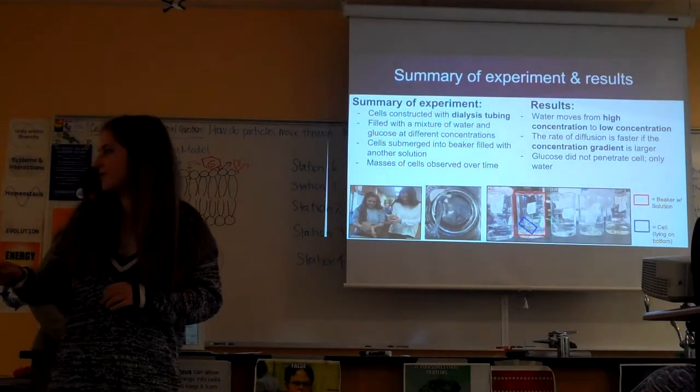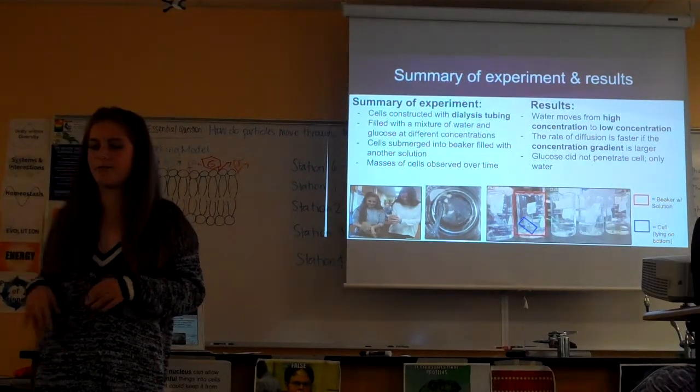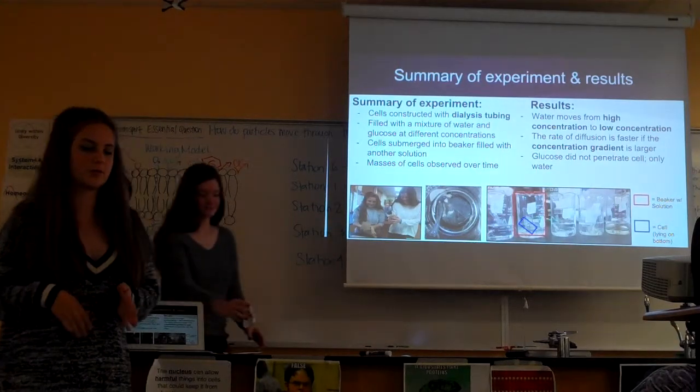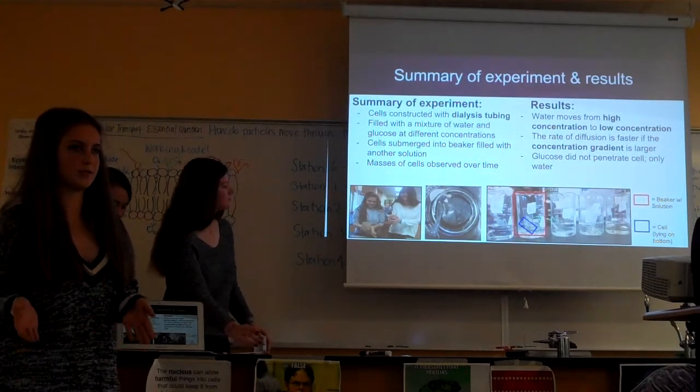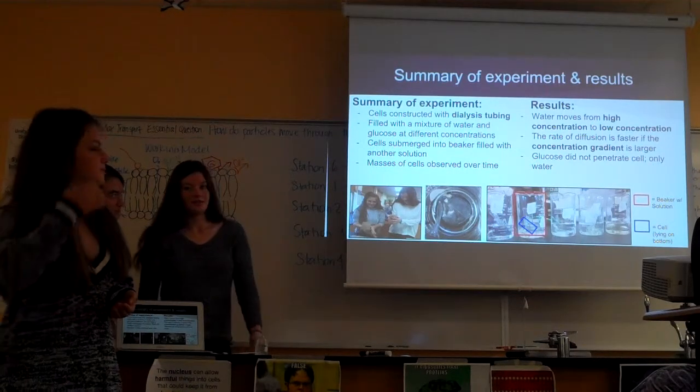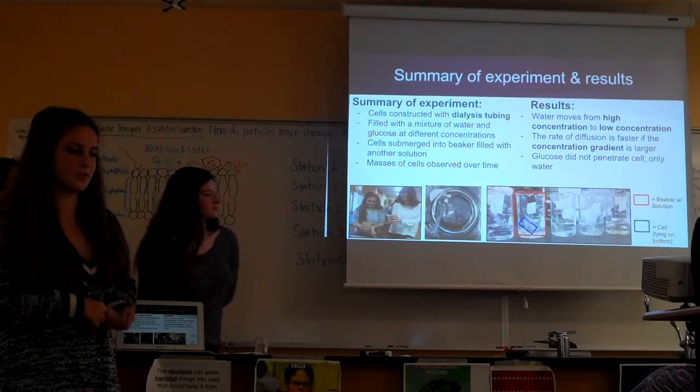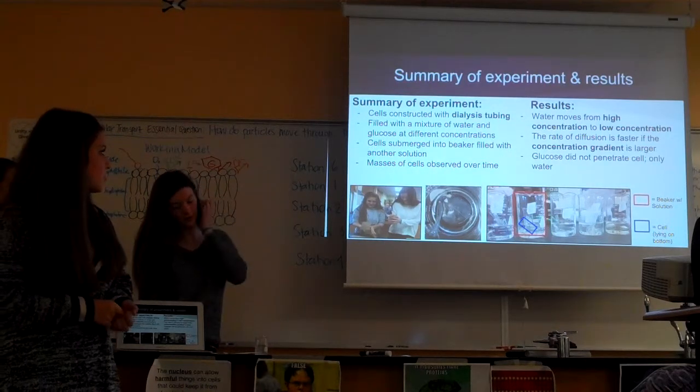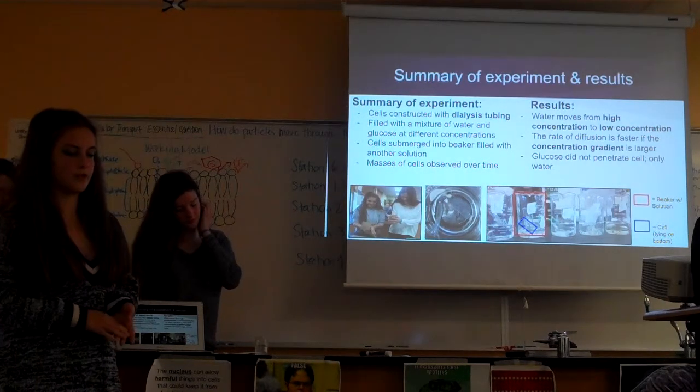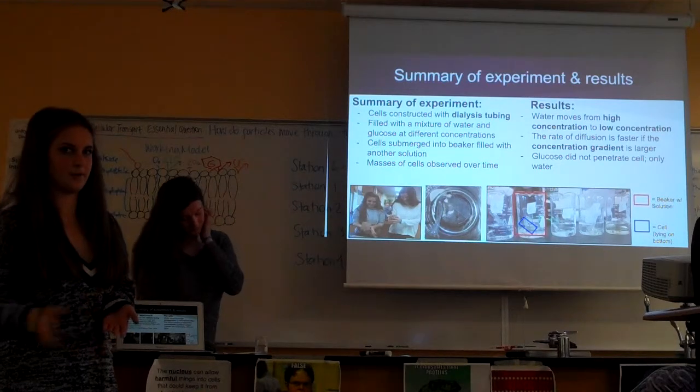We filled each with varying amounts of water and glucose. We filled cell A and cell E with solely water, cell B with 20% glucose, cell C with 50%, cell D with 80% glucose. After that we measured the mass so we could have the initial mass of each cell.